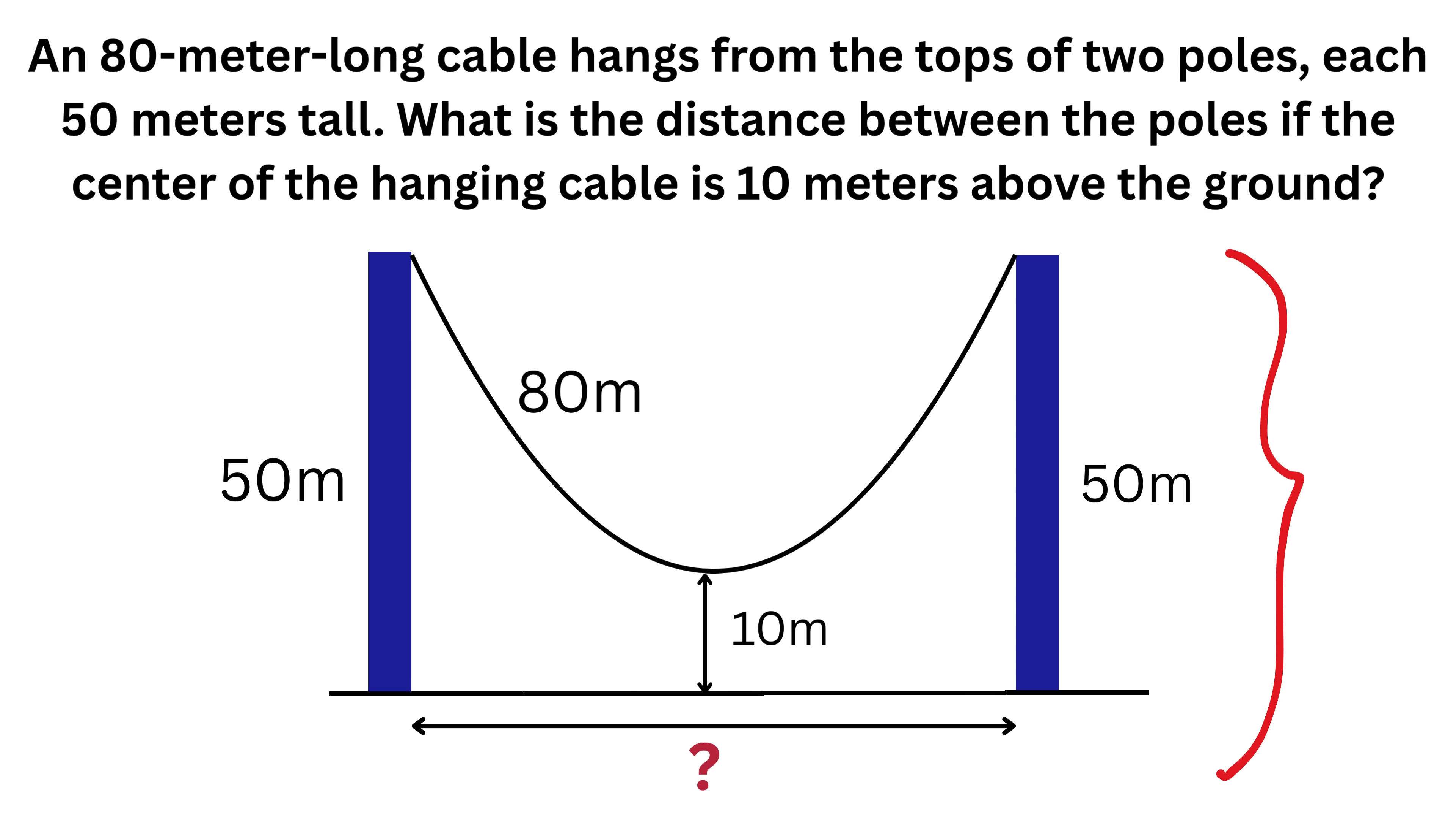I've got a diagram that illustrates the problem. Here we have the two poles, and here is the cable freely hanging. Its lowest point is 10 meters above the ground, and the height of the poles is 50 meters. We are asked to calculate the distance between the poles, that is, this length, which we'll call X.